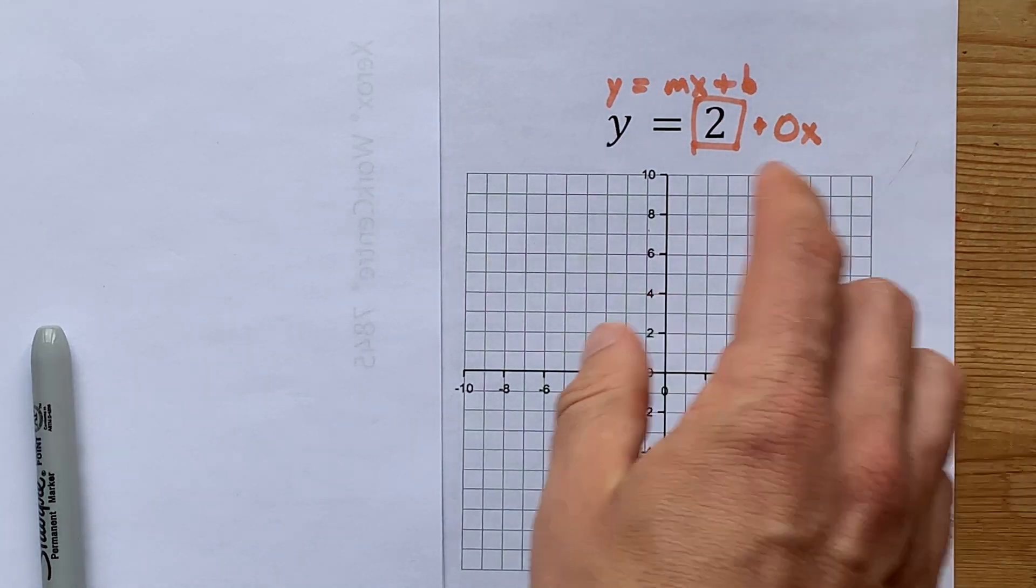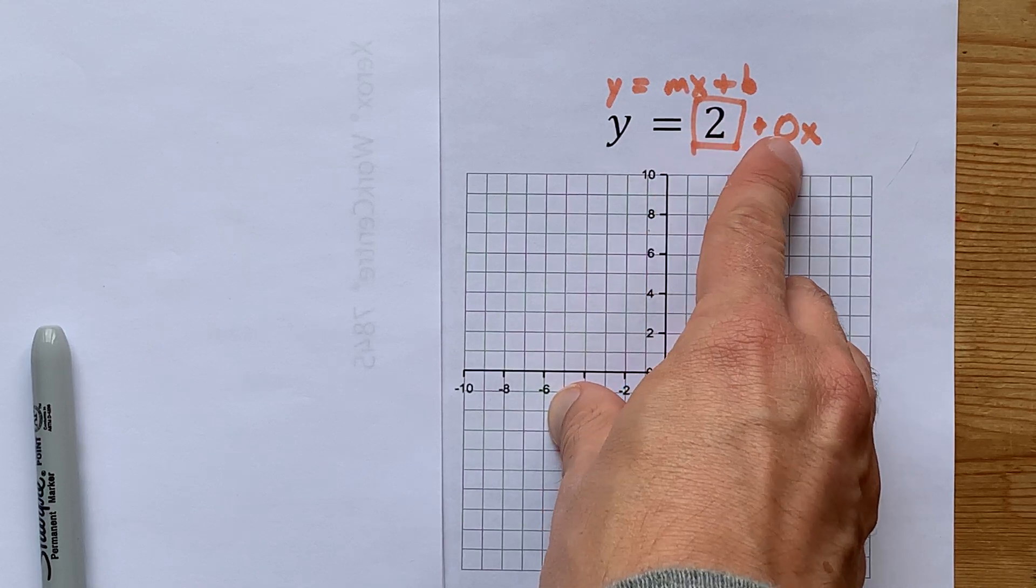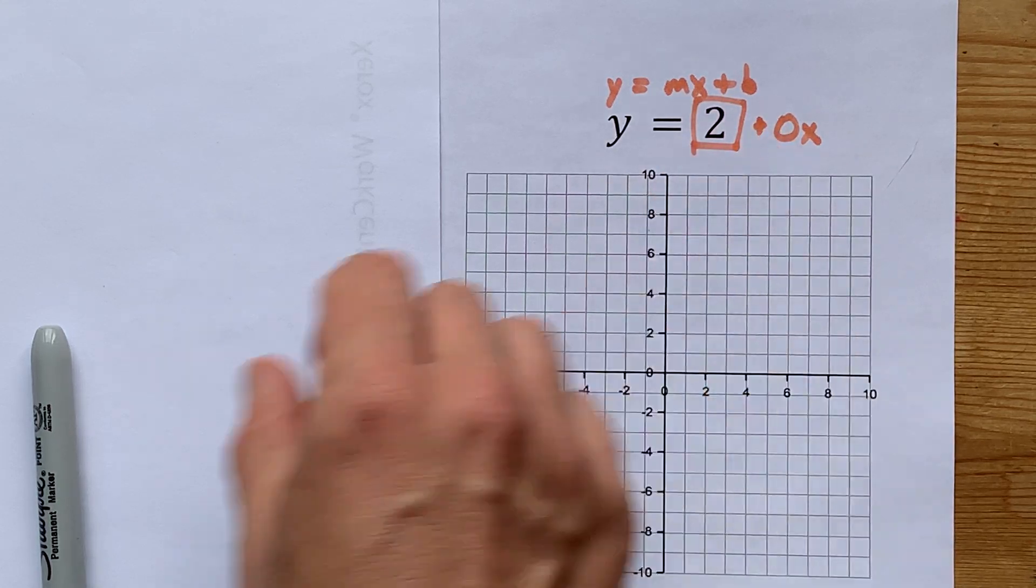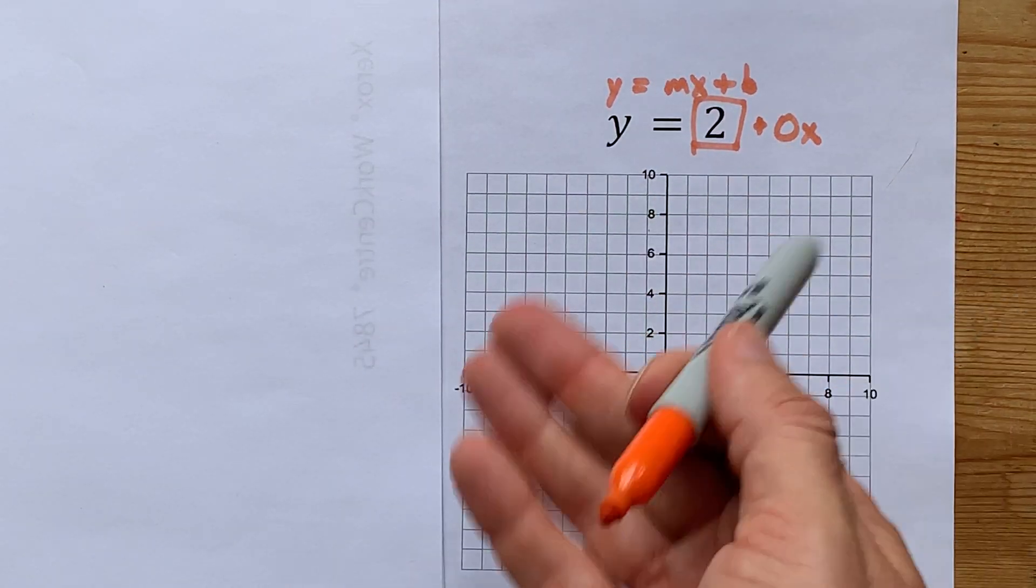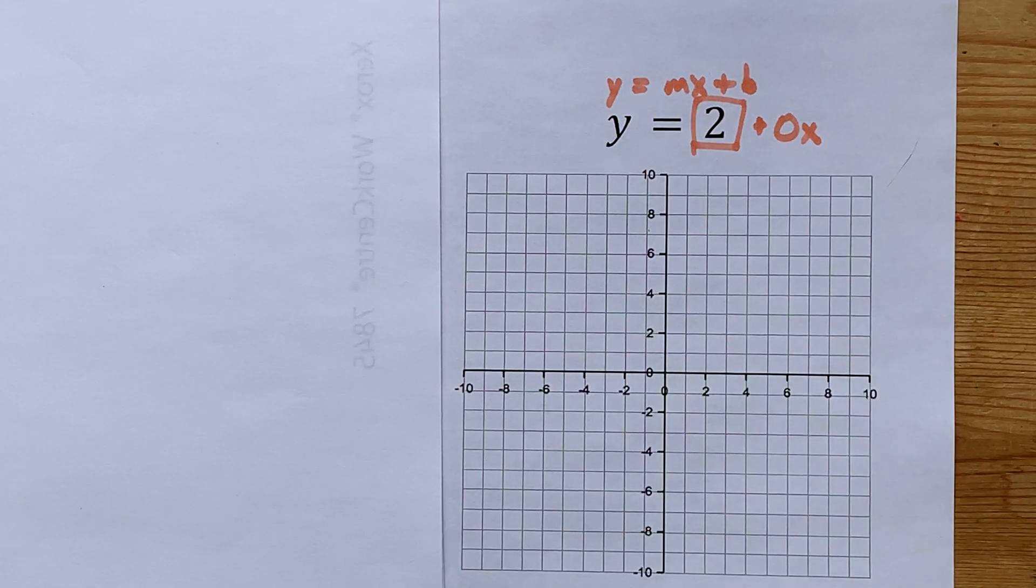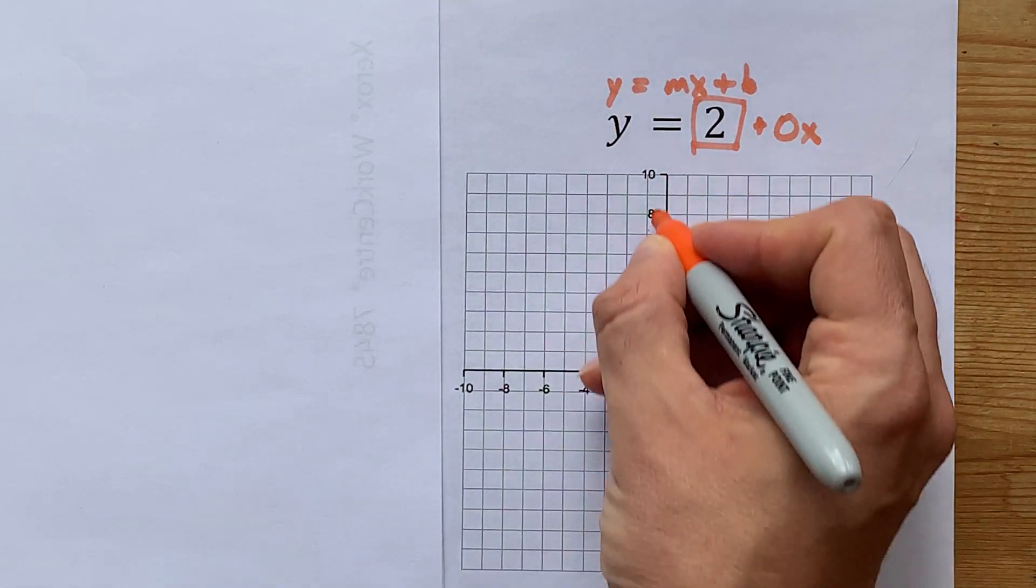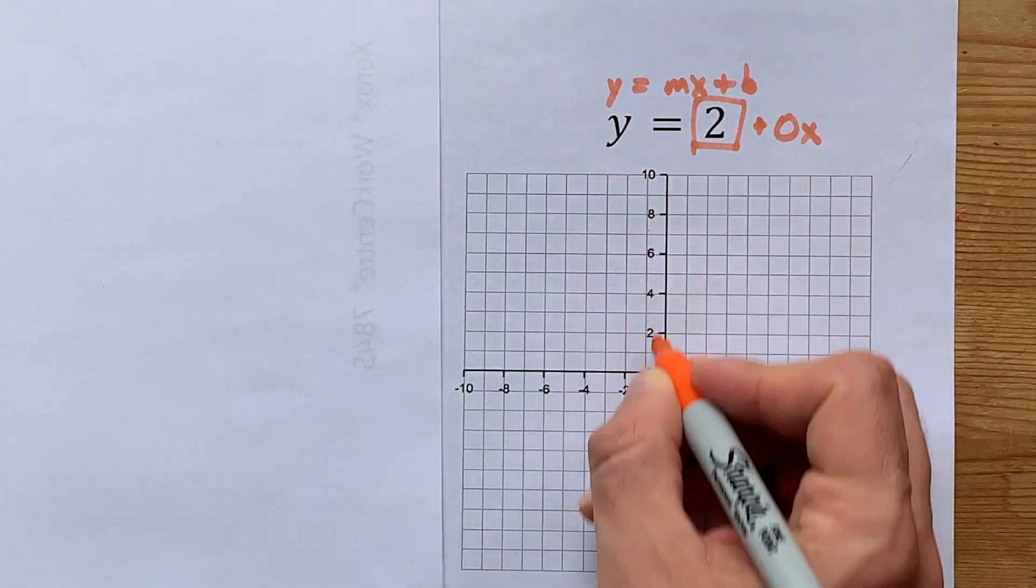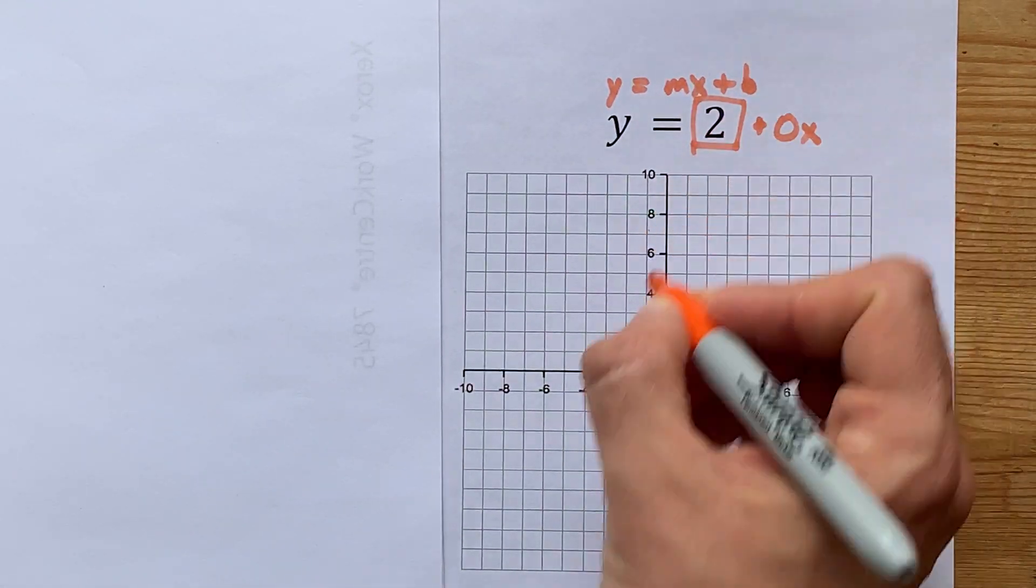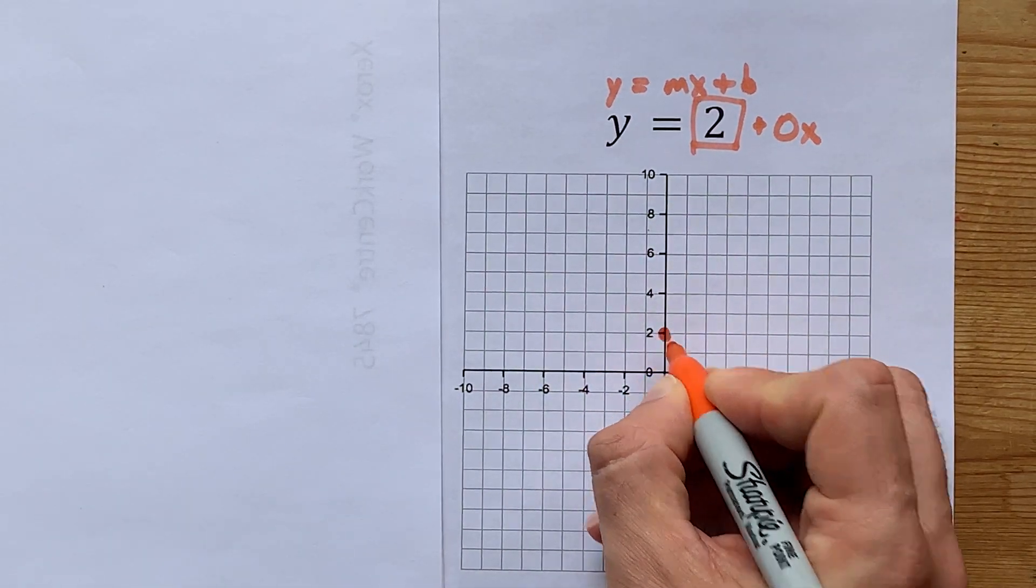What that means is I have a y-intercept of 2 and a slope of 0. What I want you to do is graph that like you would any y equals mx plus b equation. Put your y-intercept as your first dot. The y-axis is the up-down axis, and my y-intercept is 2. I'm going to put a dot there.